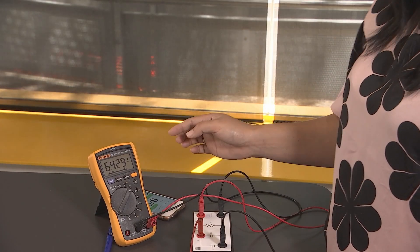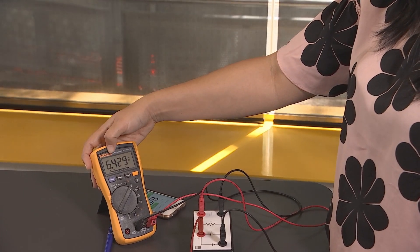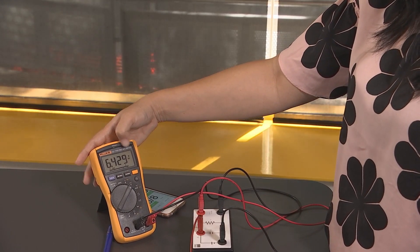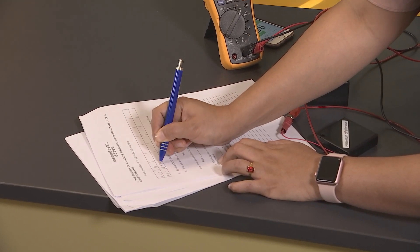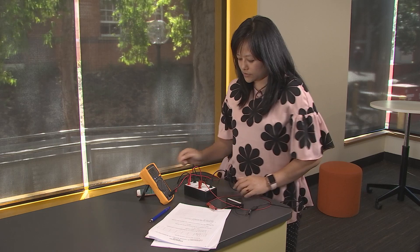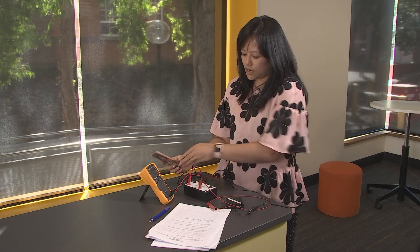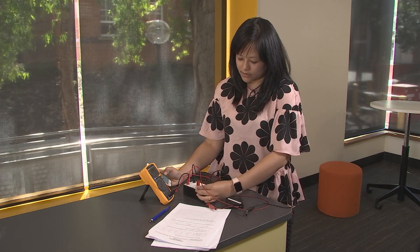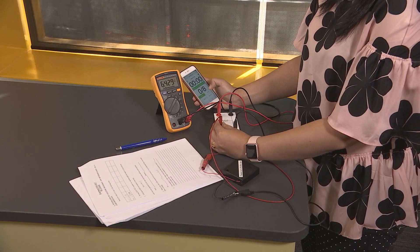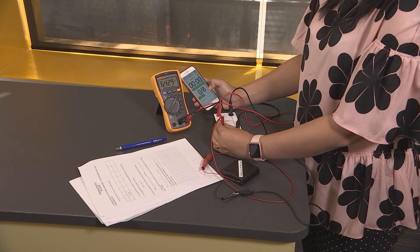So at t equals 0, the capacitor is charged to 6.429 volts. We will write down that value. I will start my timer simultaneously at the same time as I am taking out the positive of the power supply to the capacitor.